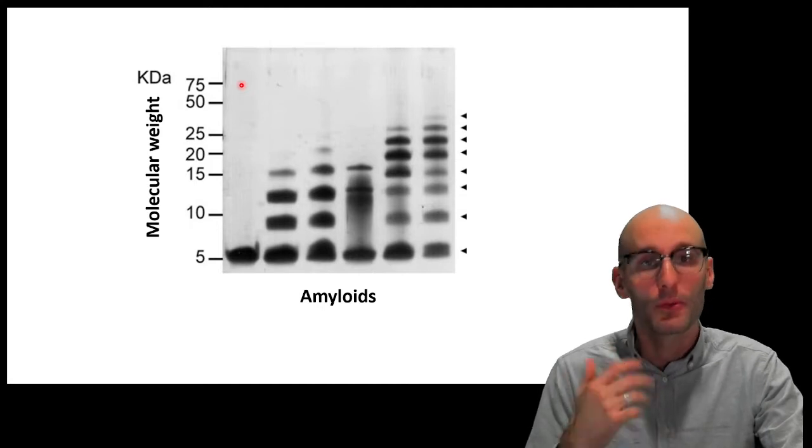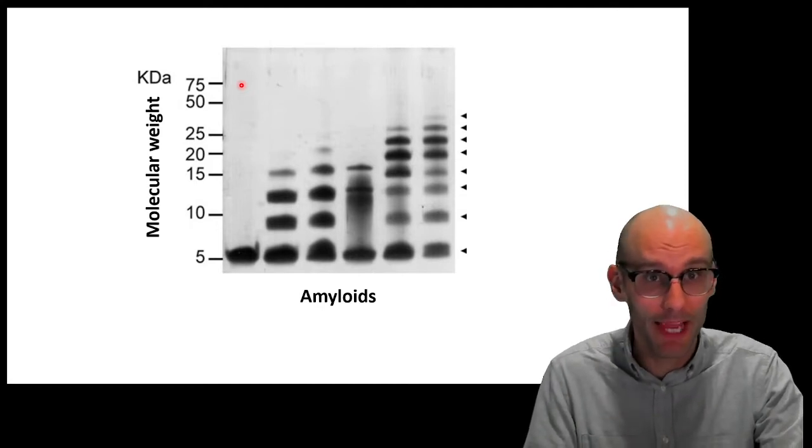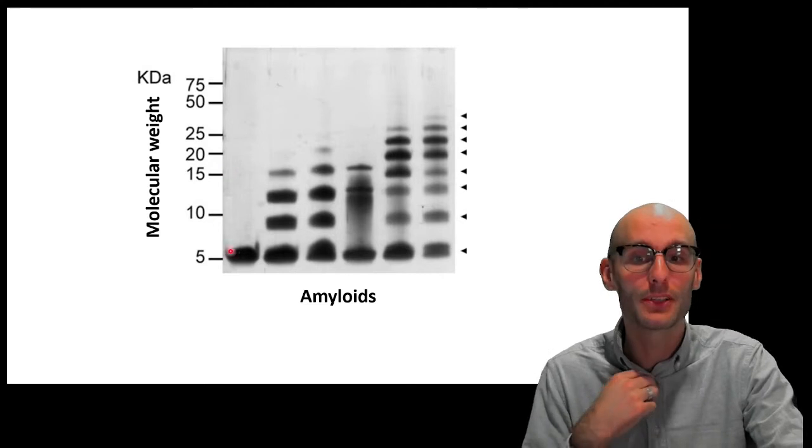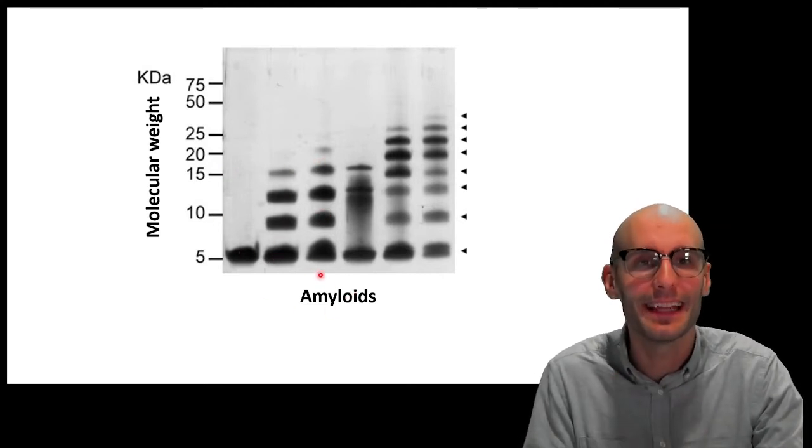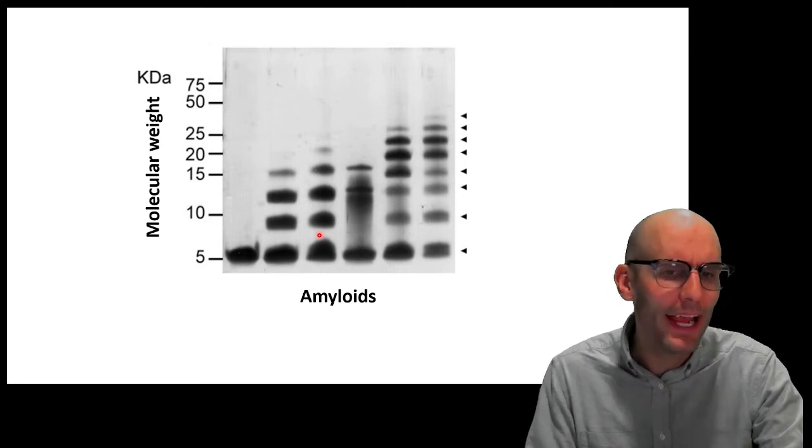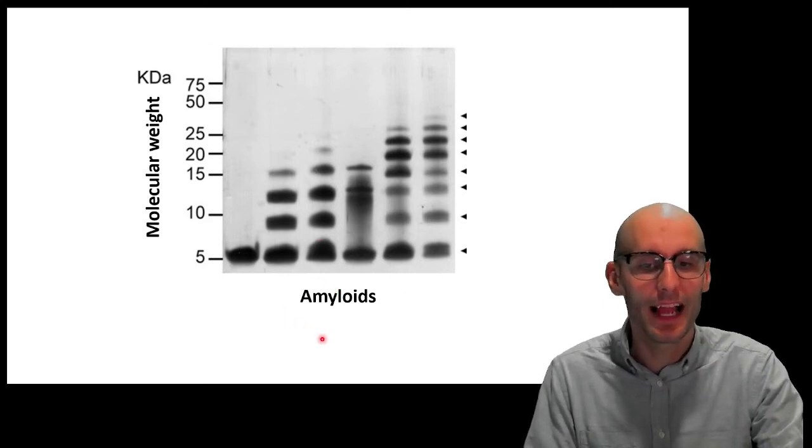And then, proteins are invisible. Remember that? Proteins are invisible. So, to see them, we do a silver stain and it allows these big black blobs here. It allows us to see the proteins. What are we looking at right here? Well, each of these lanes are amyloids.